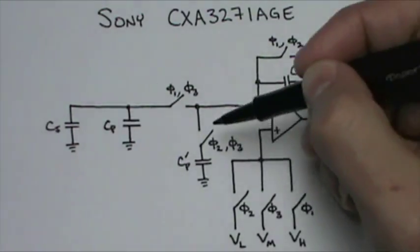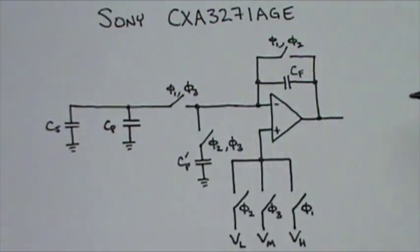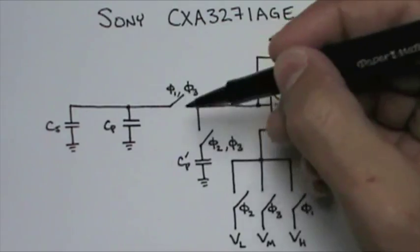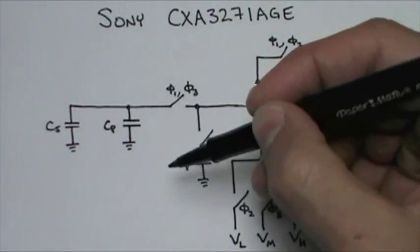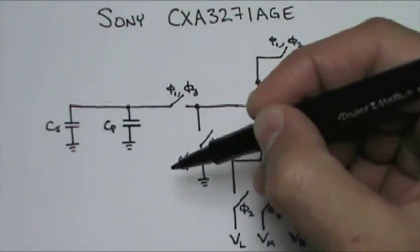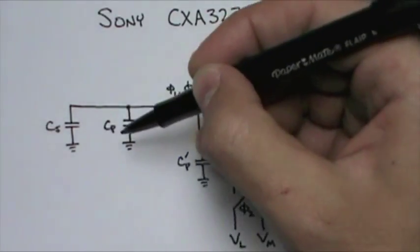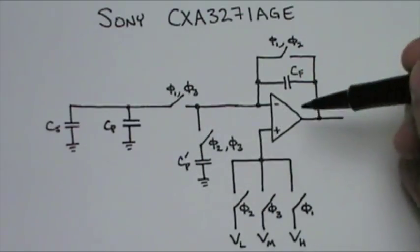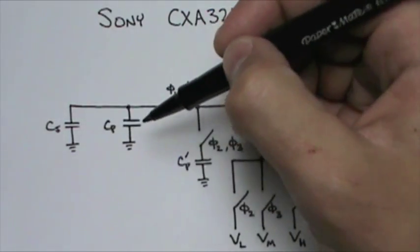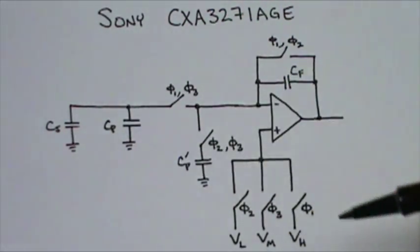In the third phase, this switch, this switch, and this switch are closed. The fact that these two switches are closed causes this low voltage on CP' to cancel out with the high voltage on CP. Thus, the only charge that's amplified is that due to the sensed capacitance, not the parasitic capacitance because it's canceled out.